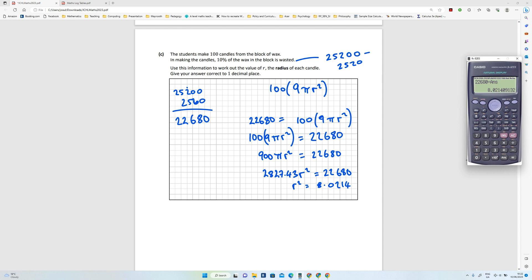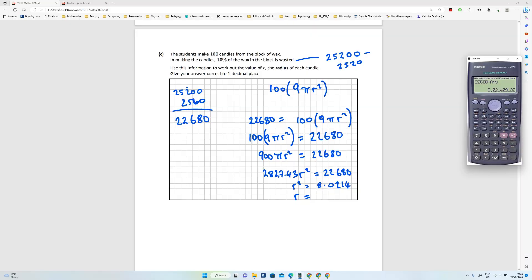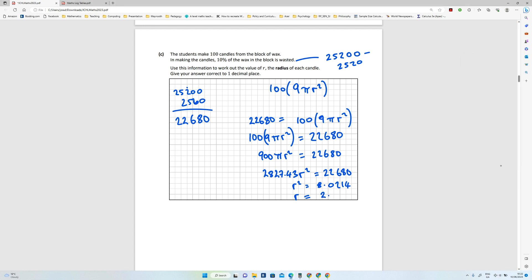Right, and now to get r I need to get the square root of that. So I need the square root of my previous answer, which is 2.83.